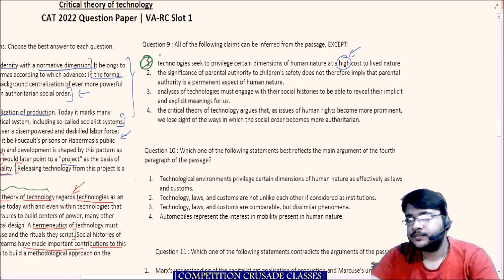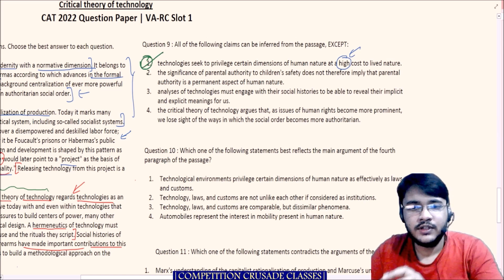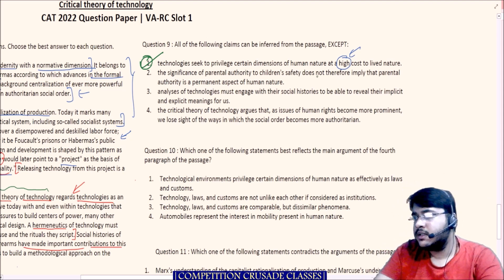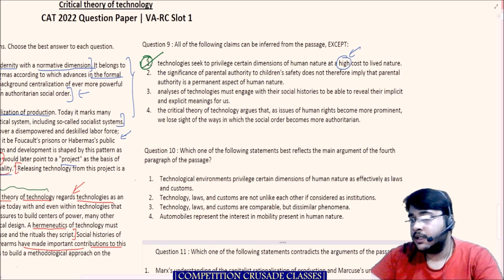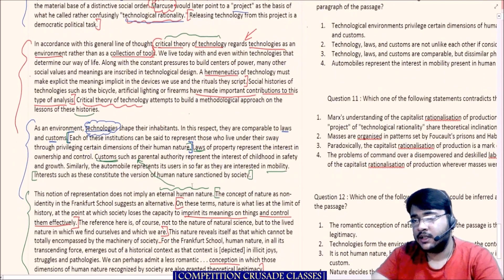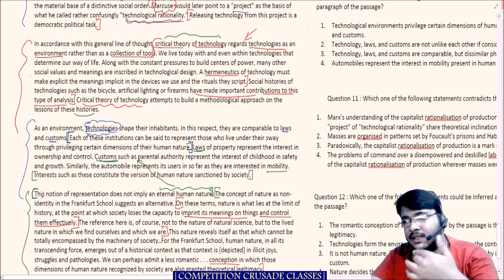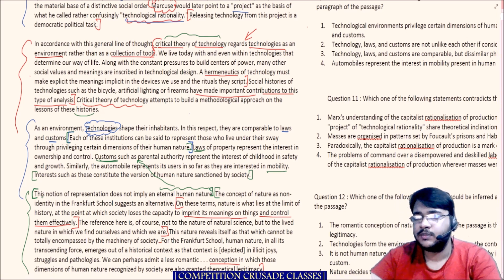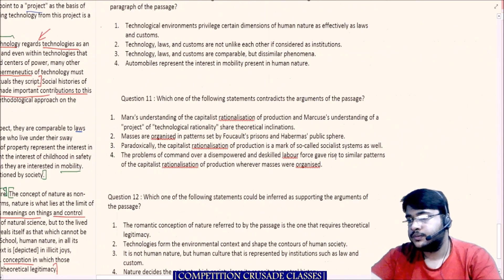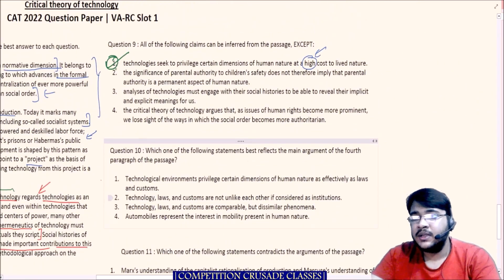Since 'high cost to lived nature' is not given in the passage, this option cannot be inferred — so this is the answer to Question 1 as the one that cannot be inferred. Option B: 'The significance of parental authority to children's safety does not imply that parental authority is a permanent aspect of human nature.' This is clearly given — customs such as parental authority represent childhood in safety and growth, and this notion does not imply an eternal human nature. So this can be inferred — it goes out.